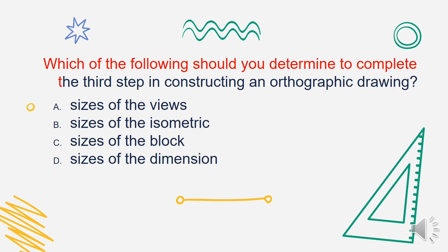Which of the following should you determine to complete the third step in constructing an orthographic drawing? Is it A. Sizes of the views, B. Sizes of the isometric, C. Sizes of the block, or D. Sizes of the dimension? The answer is Letter A. Sizes of the views.